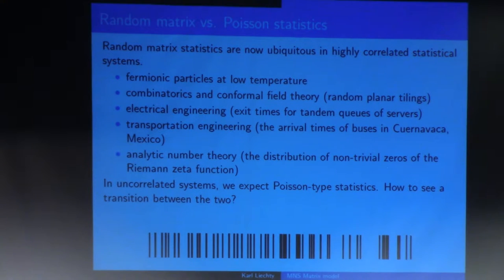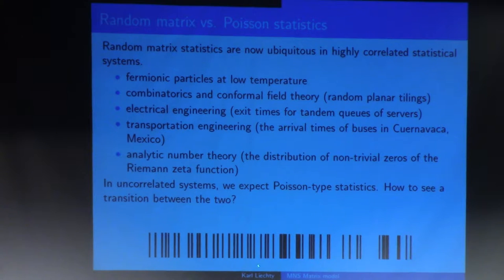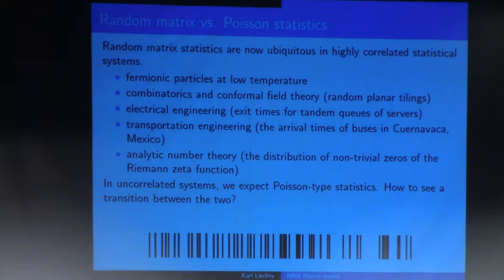In uncorrelated systems, we expect to see Poisson-type statistics or independent variables, and there's been a lot of work in the past 10 or 15 years about trying to understand transitions between these two types of statistics — random matrix-type statistics, in which particles tend to repel each other, and Poisson-type statistics, where things are independent. On the left we see more regular particles, typical of random matrix statistics; on the right we see things that are bunched together with big gaps, typical of independent particles. So what's going on in the middle?